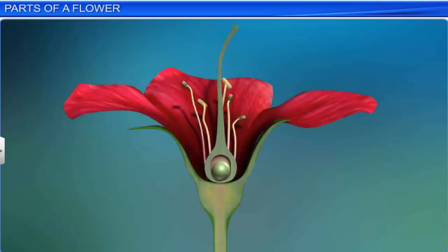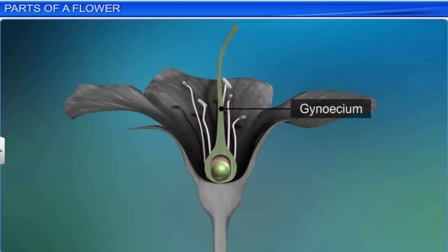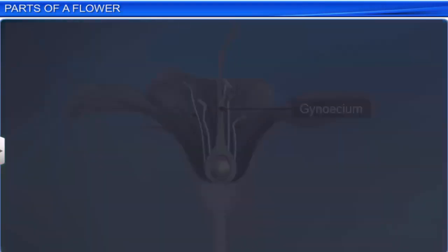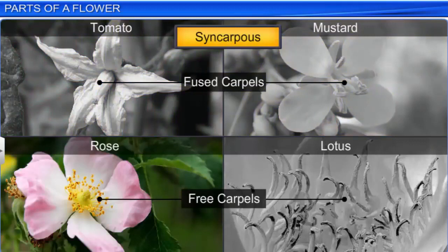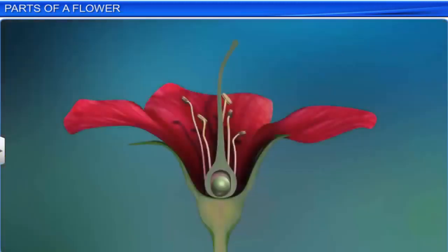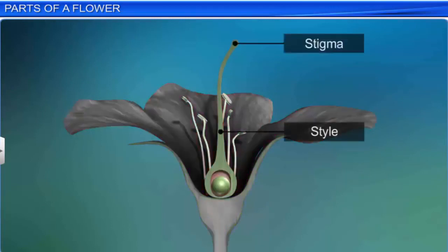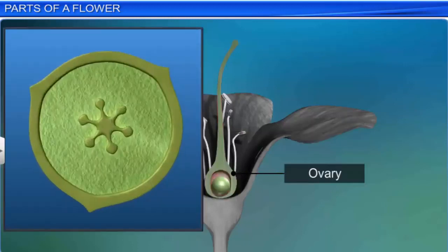The innermost whorl is the gynoecium, consisting of one or more carpels, which are the female reproductive organs. The carpels can be either fused or free. In tomato and mustard, the carpels are fused and are called syncarpous, while in rose and lotus the carpels are free and are called apocarpous. Each carpel has three parts: stigma, style, and ovary. The stigma is the part that receives the pollen grains. The style is the elongated tube that lies on the ovary and connects it to the stigma. The ovary is the enlarged basal part and bears one or more ovules, which are attached to a placenta that is soft and flat.